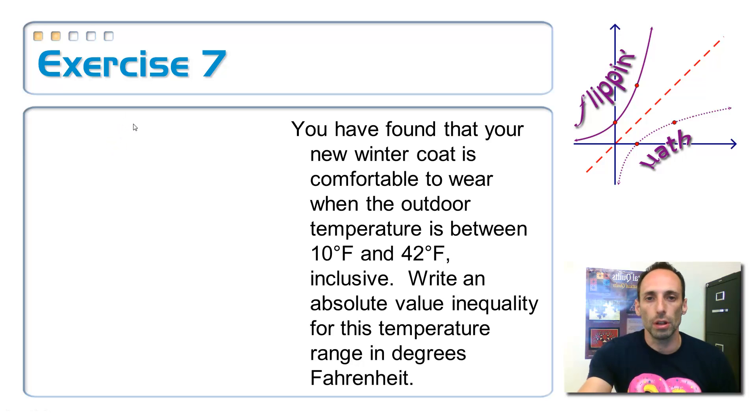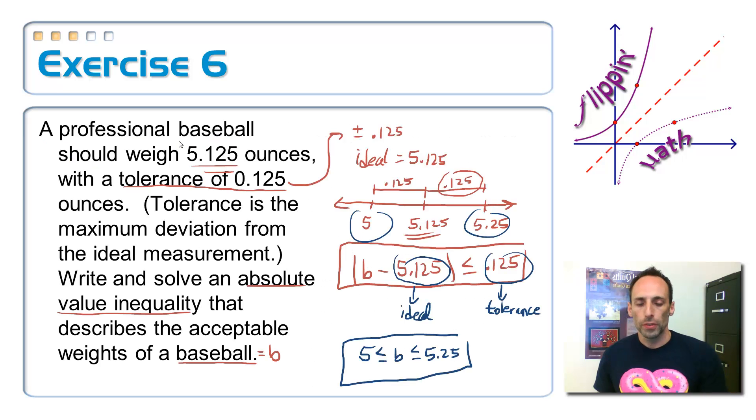Anyway, write an absolute value inequality for this temperature range in degrees Fahrenheit. So this time I don't have a tolerance. I don't know how much bigger it is on either side, plus or minus. Also, I don't have an ideal one. All I have is the endpoints of my interval. So let me just put it on a number line here and go, here's 10 and here's 42. And I get to have either of those two numbers and everything that's in between there. So let's just go back for a second in the previous one and try to figure out what we're supposed to do here. So look at the picture right here, the graph. When I got the tolerance, the tolerance was the distance away from the ideal. And look at where the ideal is in between the two endpoints. It's right in the middle.